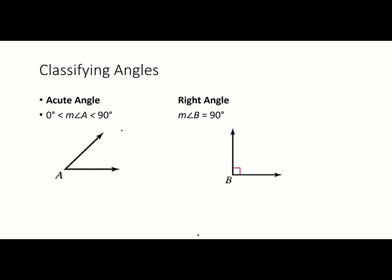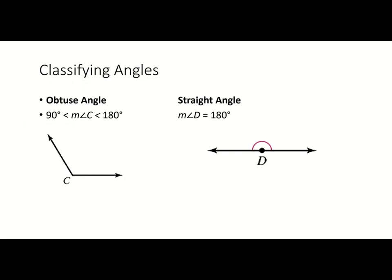Here we're reviewing how to classify angles. We have different types: an acute angle — think 'it's cute,' like babies or puppies, small — is always between 0 and 90 degrees, not including 0 or 90. A right angle equals exactly 90 degrees. Obtuse angles are between 90 and 180 degrees — greater than 90 but less than 180. Finally, a straight angle is your straight line with a point in the middle making two opposite rays, and it always equals 180 degrees.